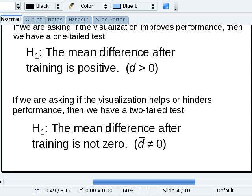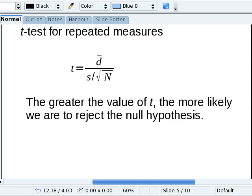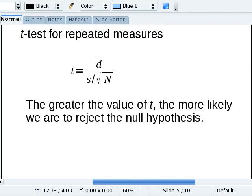What we're going to use to determine whether the null hypothesis should be retained or rejected is this formula, the t-test for repeated measures. The greater the value of this statistic, the more likely we are to reject the null hypothesis. So we're going to look at this d̄, the mean of the differences, the standard deviation of the differences, and the number of people. All of these work together to get the t-statistic.